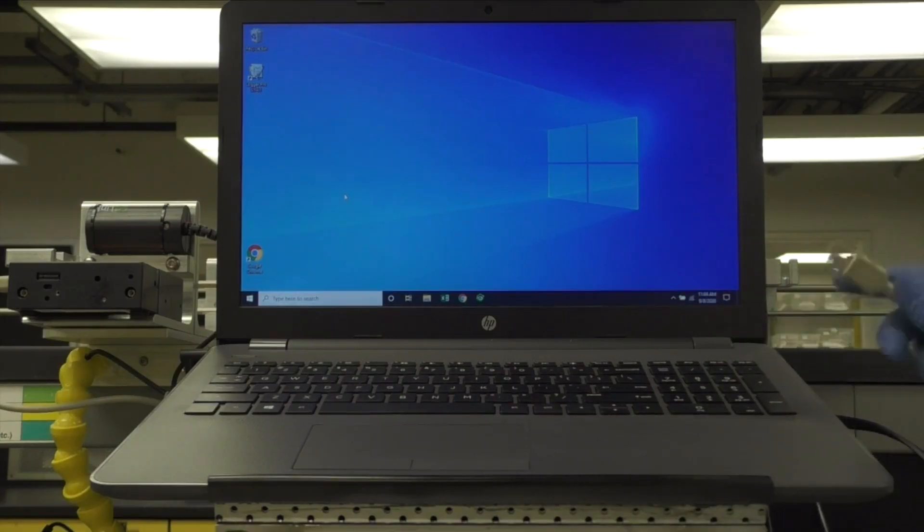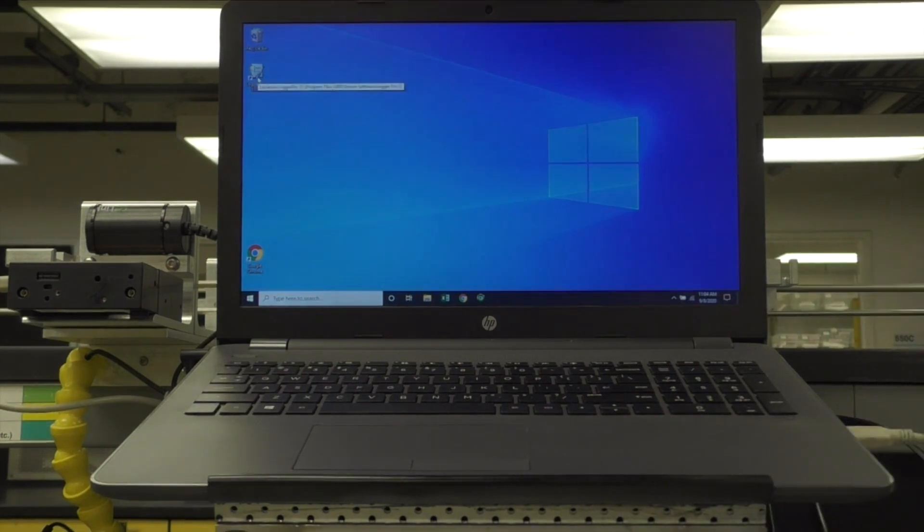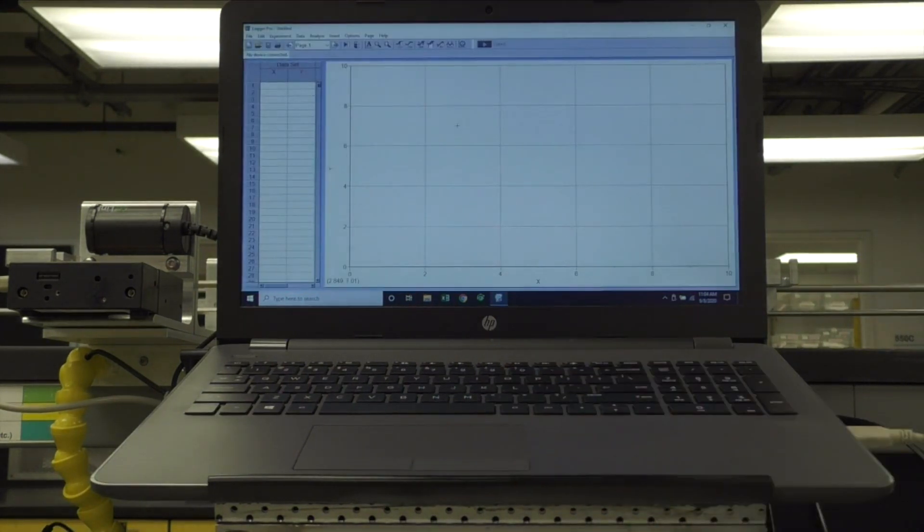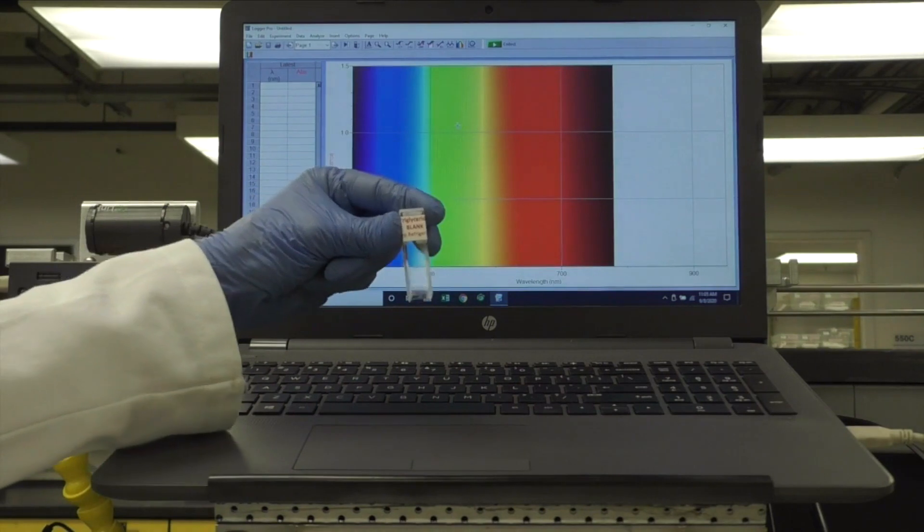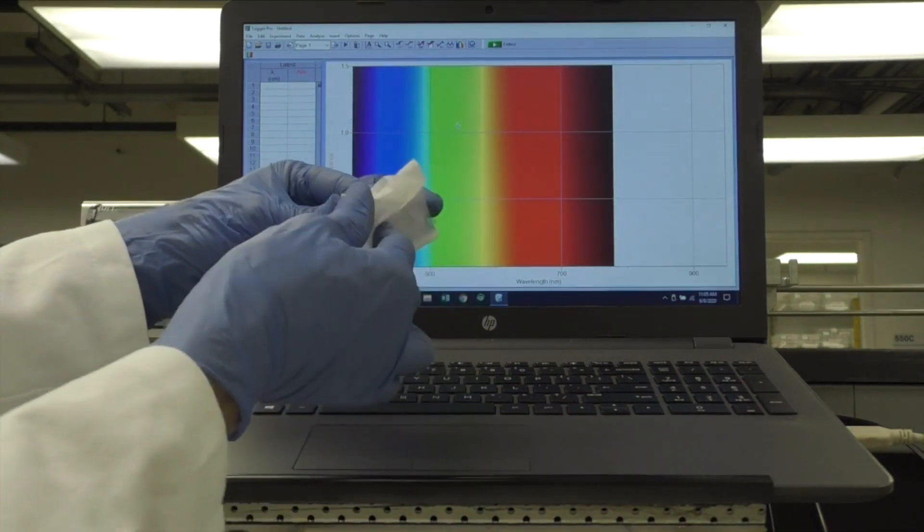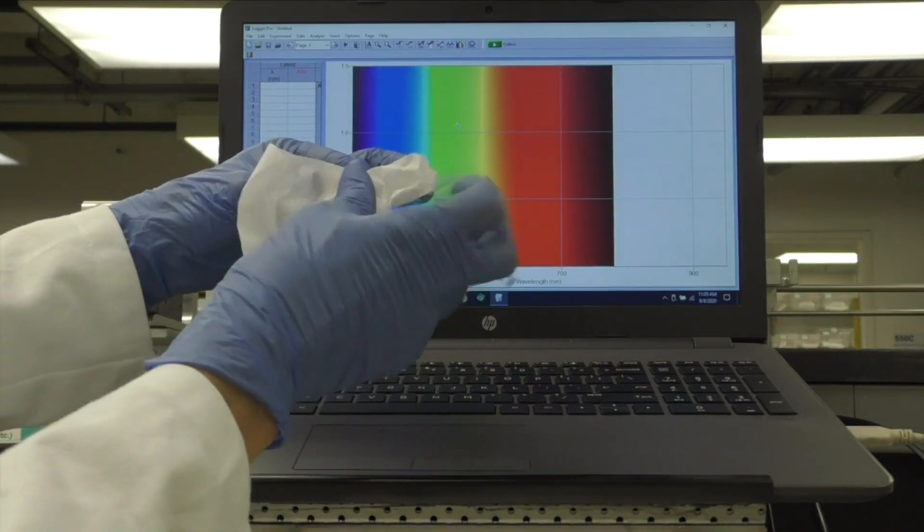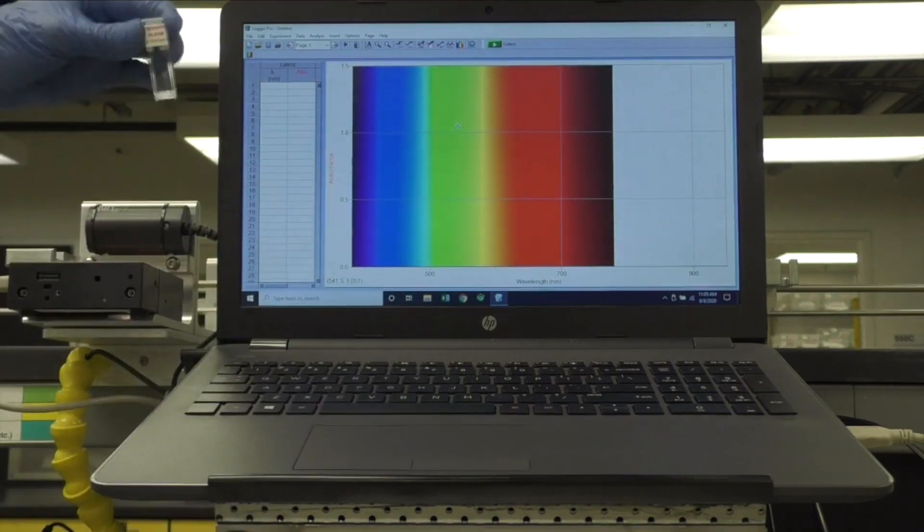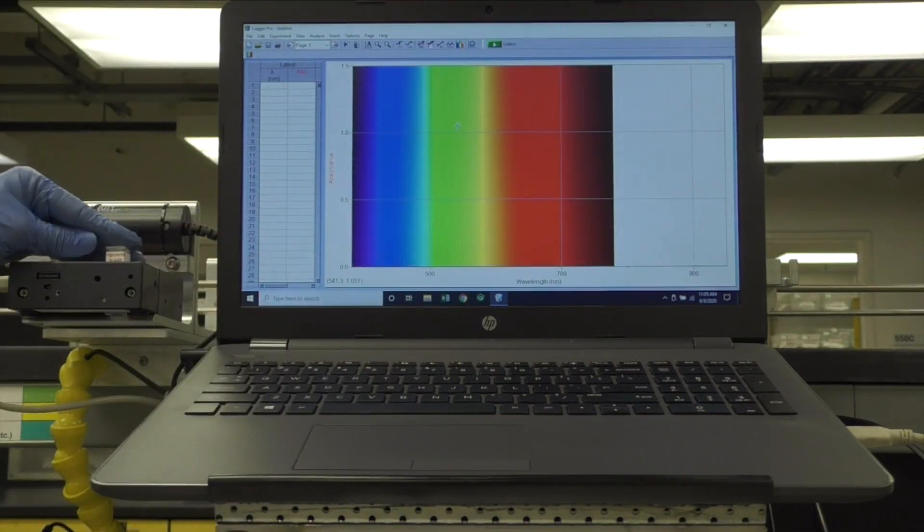Begin by plugging in the cable labeled with green tape and then opening LoggerPro. Using the prepared blank from your patient block, wipe it with a Kimwipe and place it in the spectrometer, being sure a clear side faces front.